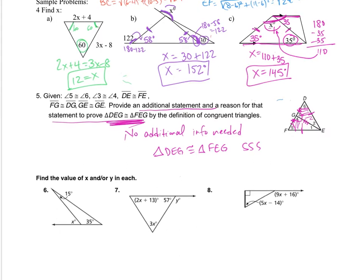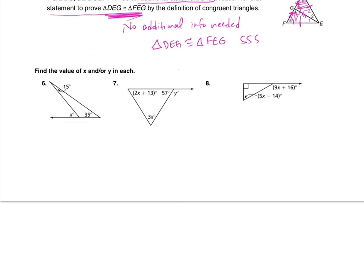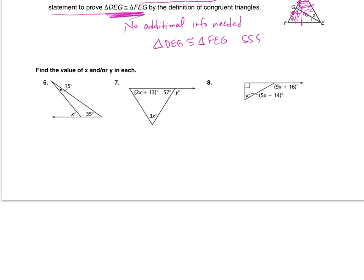Moving on to number 6, we need to find the value of X and/or Y. For this first one, the exterior angle equals the sum of the two remote interior angles. So X equals 15 plus 35. X equals 50. Again, the exterior angle equals the sum of the two remote interiors — that's the theorem we've been using and practicing.